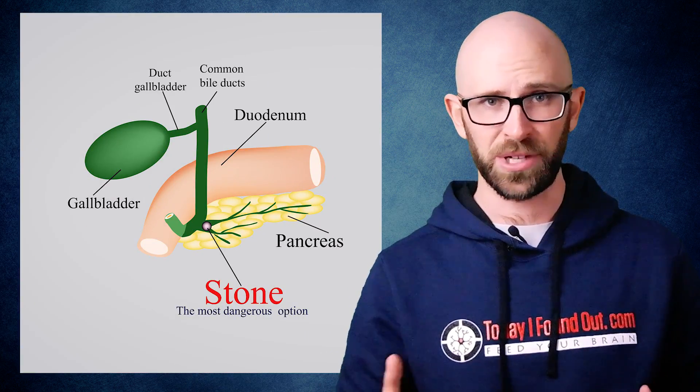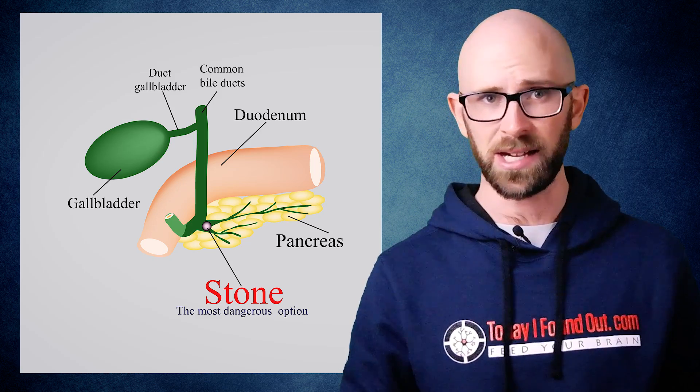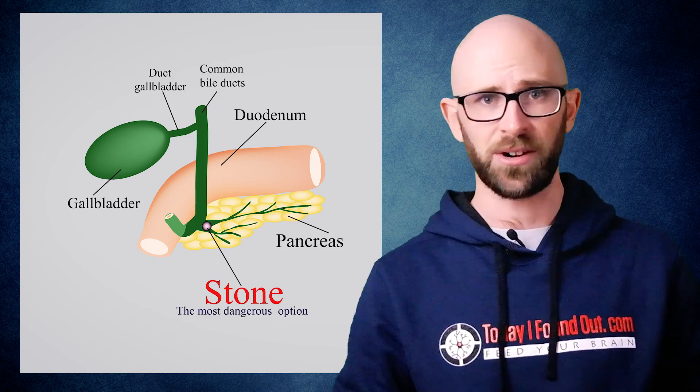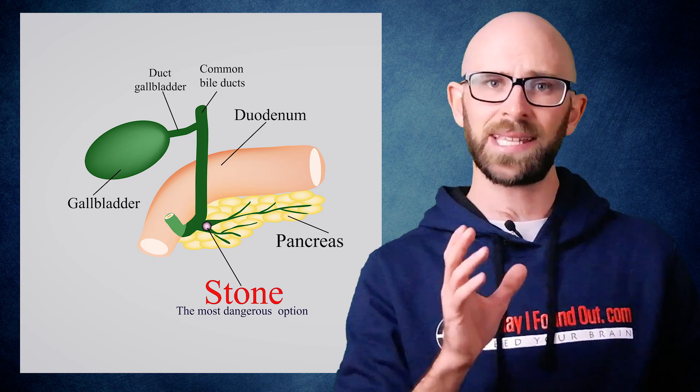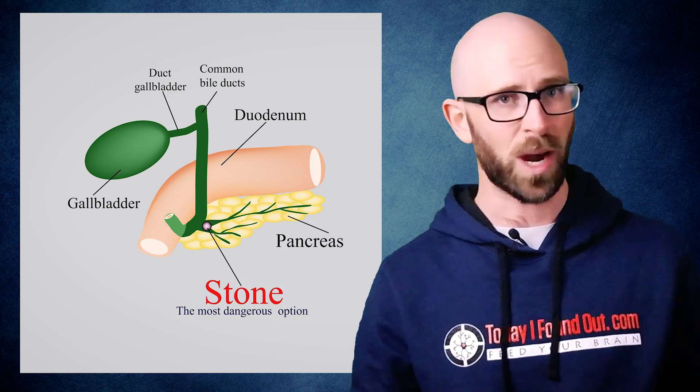Without this stercobalin, your poop would typically look grayish white. Because of this, a sure sign you are having problems with bile production, such as a blocked bile duct by a gallstone or something more serious like pancreatic cancer, is if you notice your poop is this white grayish color.